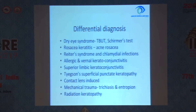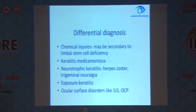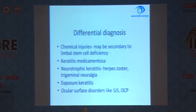Reiter's syndrome and chlamydial infection — take the relevant history. Allergic and vernal keratoconjunctivitis will have a typical history. Superior limbic keratoconjunctivitis, Thygeson's superficial punctate keratopathy, contact lens induced keratitis, mechanical trauma like trichiasis and entropion — so lid examination is important. Radiation keratopathy. Chemical injuries can directly lead to these lesions or later in the course of the disease they may be because of limbal stem cell deficiency. Keratitis medicamentosa also presents with punctate epithelial erosions. Neurotrophic keratitis as in herpes zoster and trigeminal neuralgia. Exposure keratitis may also present like this. And ocular surface disorders like SJS and OCP often present like punctate erosions.